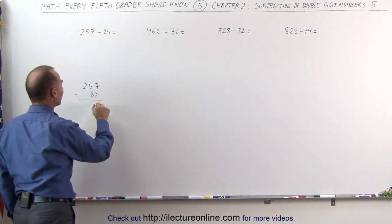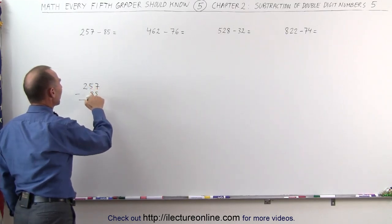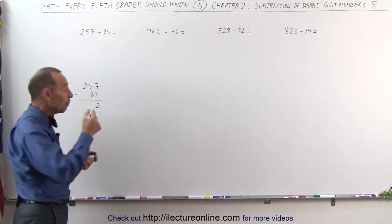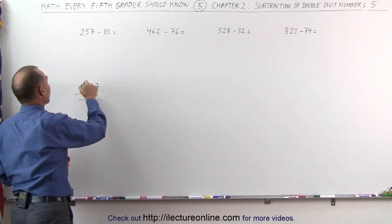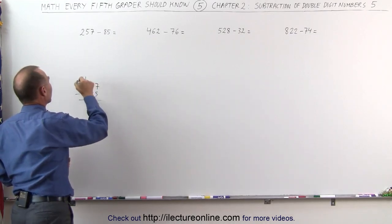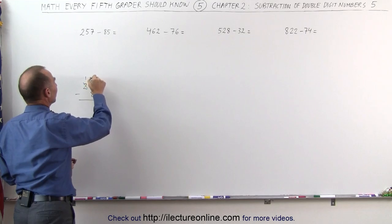We take 7 minus 5, that gives me 2. 5 minus 8, well I can't do that so I have to go borrow 1 from the number before, so this becomes, I'm going to borrow 1, that becomes a 1 and this becomes 15.